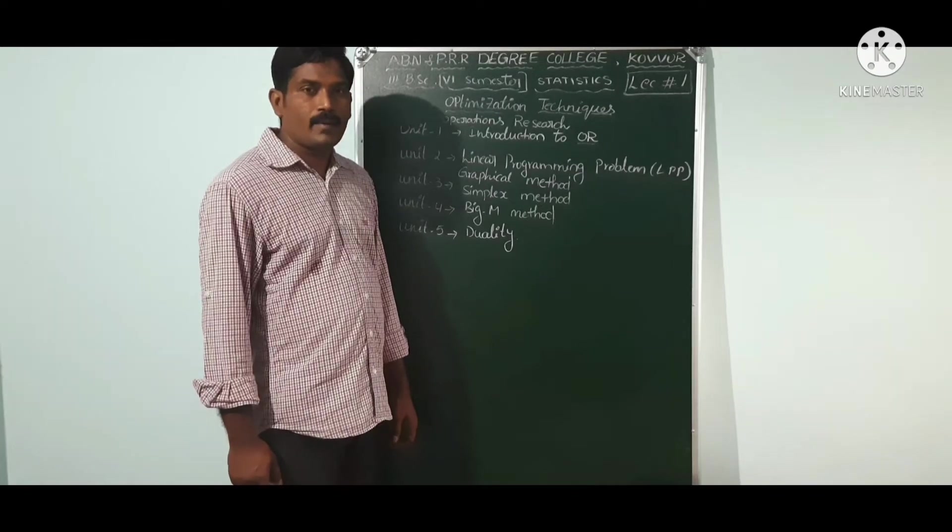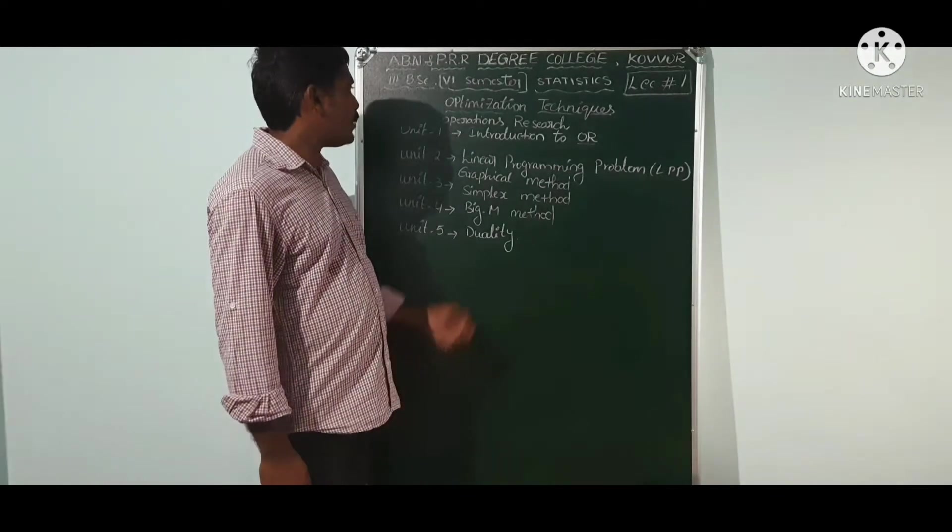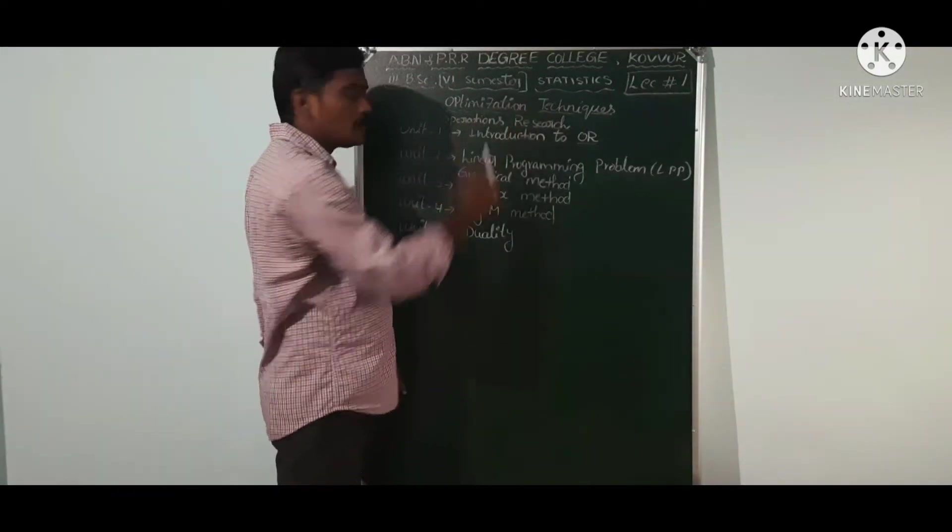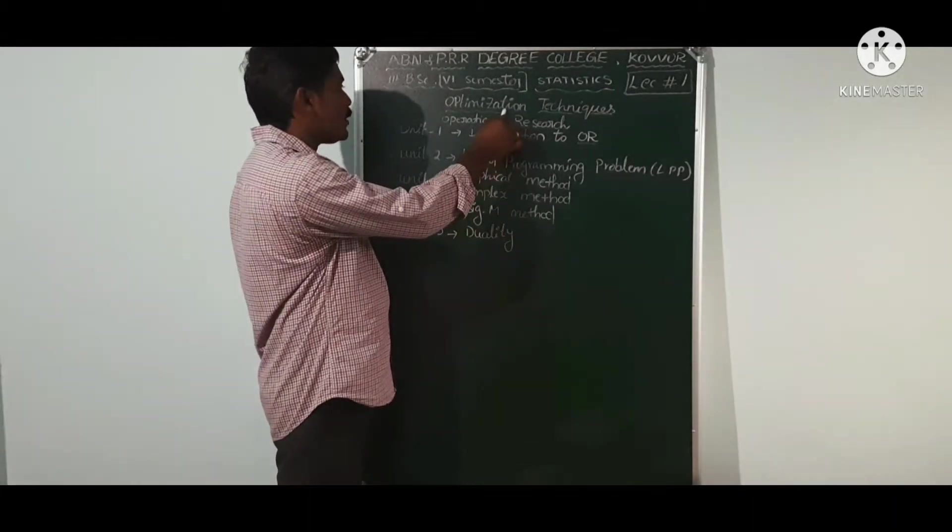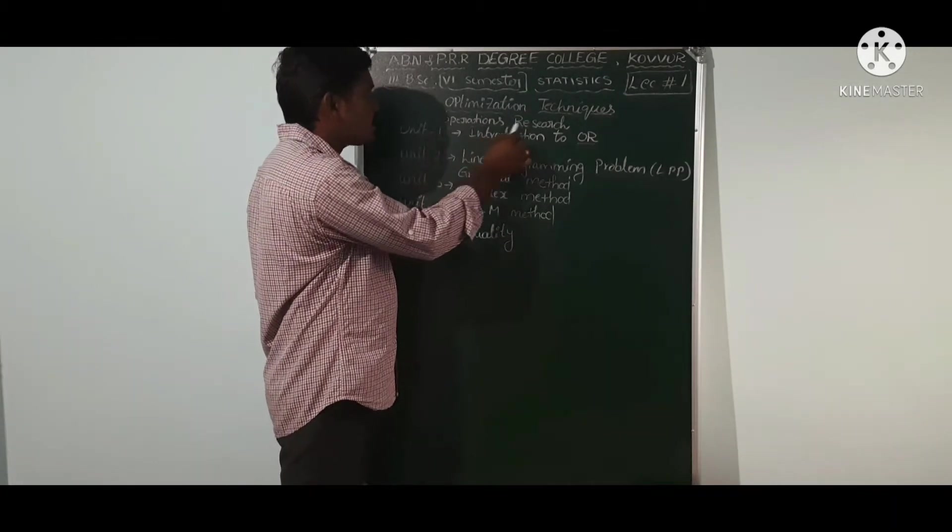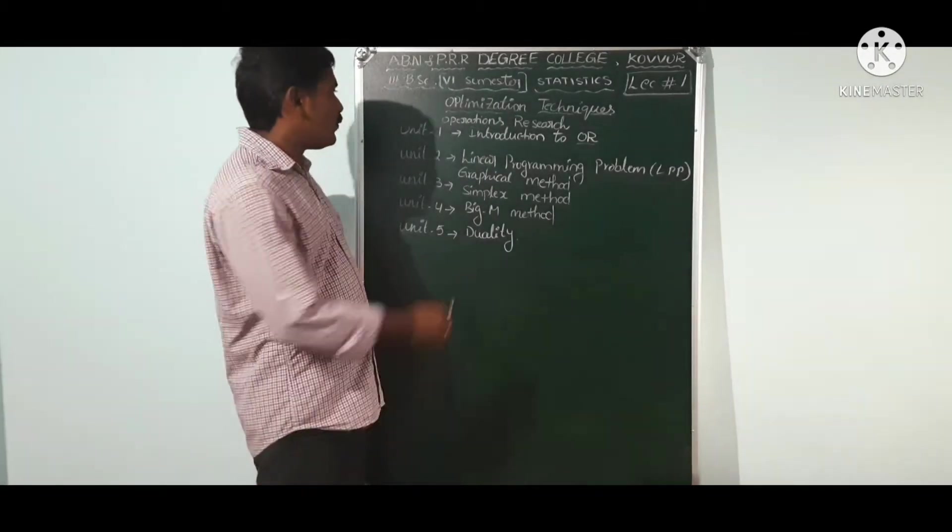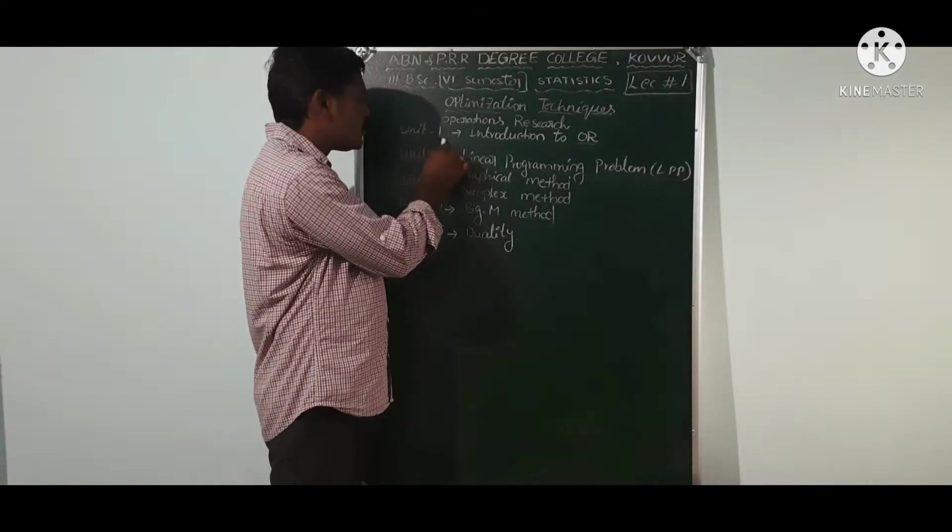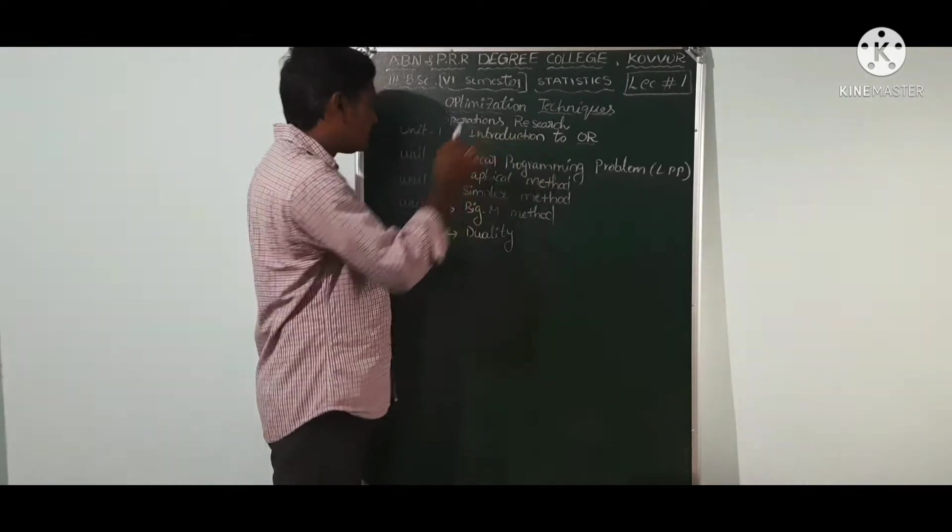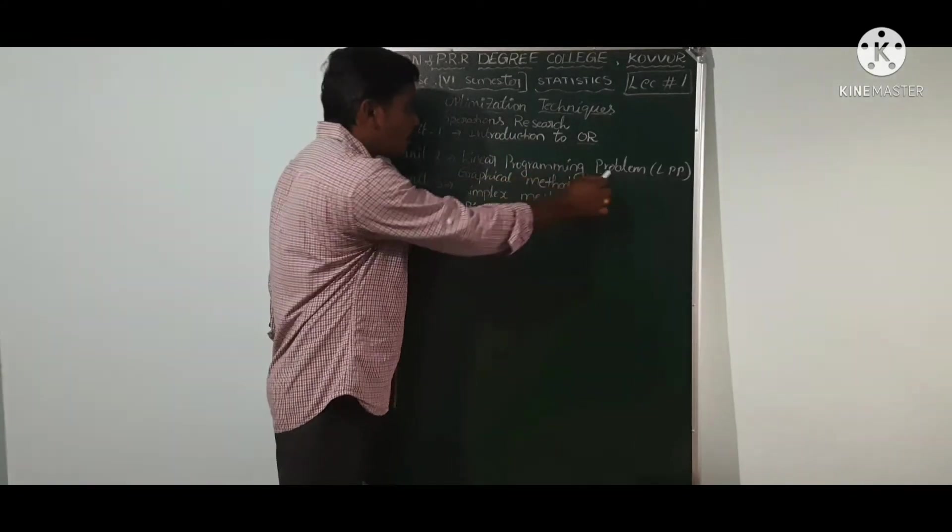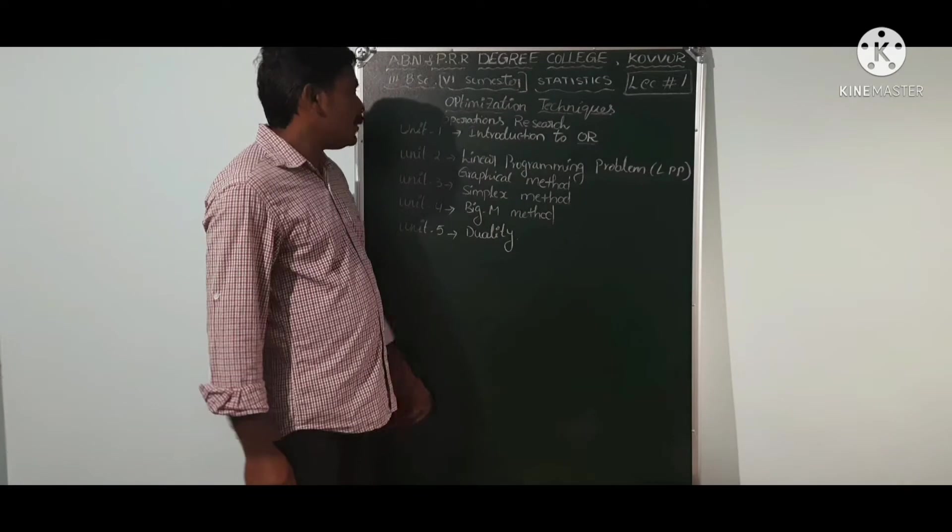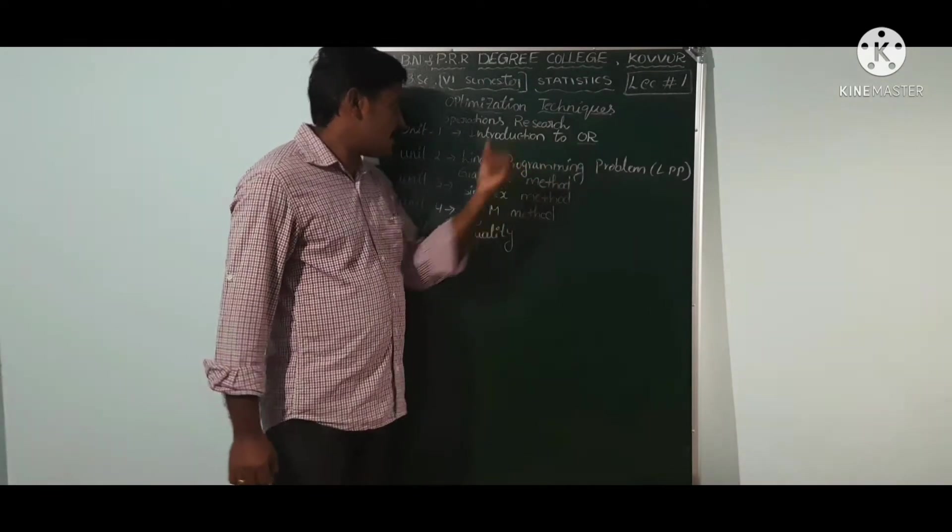Today I am discussing about the Elective Paper Optimization Techniques. Optimization Techniques are also recalled as Operations Research. Total of Optimization Techniques are 5 units. Unit 1 is Introduction to Work. Unit 2 is Linear Programming Problem. It is one of the techniques for Operations Research.